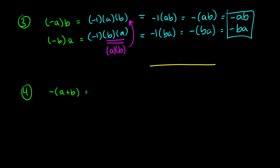You can think of this like the number line. Imagine some number here that's a times b. Multiply it by negative 1 and now you're on the other side at negative ab.